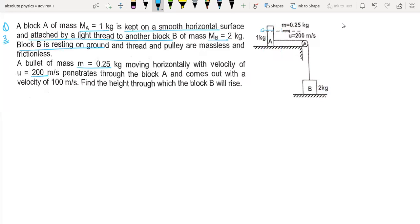The bullet comes out with a velocity of 100 m/s. Find the height through which block B will rise.